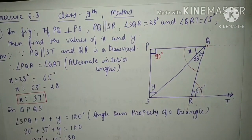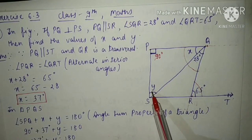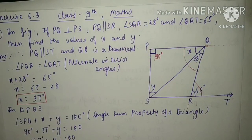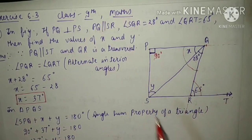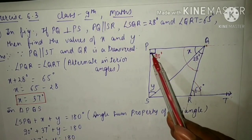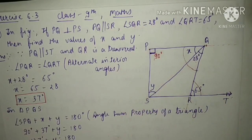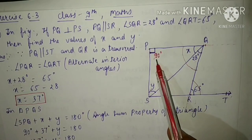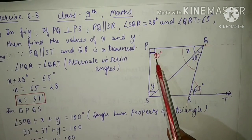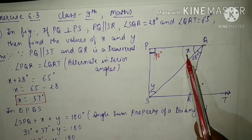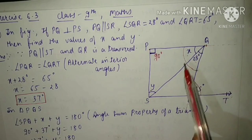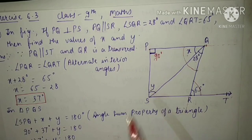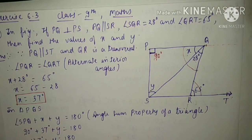Now we have to find the value of Y. In triangle PQS, this angle is 90 degrees and X is 37 degrees — we just found that. We need the value of Y, so we will apply the angle sum property of a triangle.